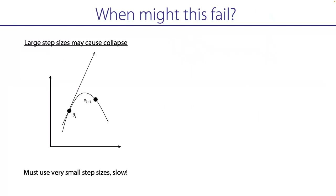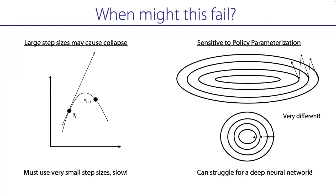What's problematic is that if you choose step sizes wrong, you might go too far — in policy gradient, taking a wrong step causes you to collect bad data and things deteriorate rapidly. So you often need very small step sizes, which makes it super slow. Second, it's super sensitive to the policy parameterization. Ideally, if you reparametrize your policy in a functionally similar way, it shouldn't change your update much. But policy gradient is very sensitive to parameterization, which makes it hard to use with deep neural networks.